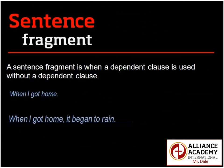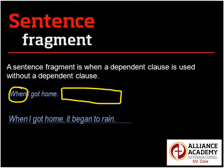A sentence fragment is when we have a dependent clause and nothing else. For example, 'When I got home' — we have the marker word 'when,' and the reader is expecting more information. It's an incomplete thought. To fix it, we add an independent clause: 'When I got home, it began to rain.' A sentence fragment is simply a dependent clause without an independent clause — an incomplete thought.